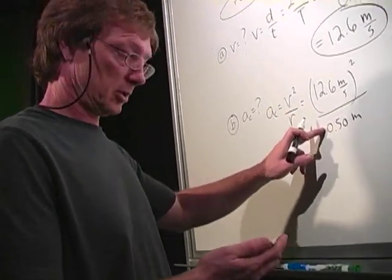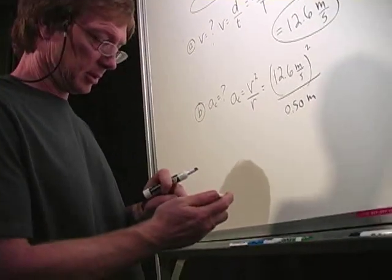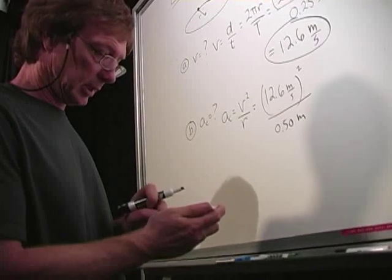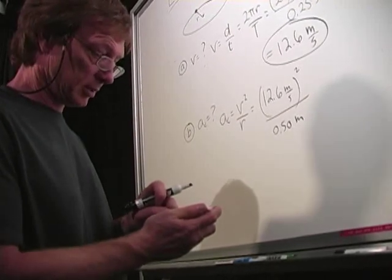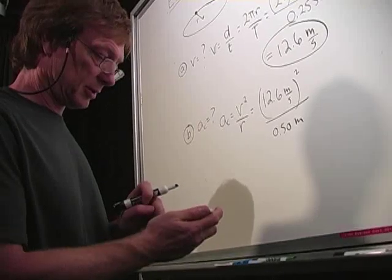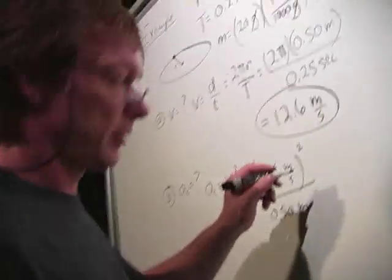Let me try that again. 12.6 times 12.6 equals 158 divided by 0.5 equals, that's better, 318.